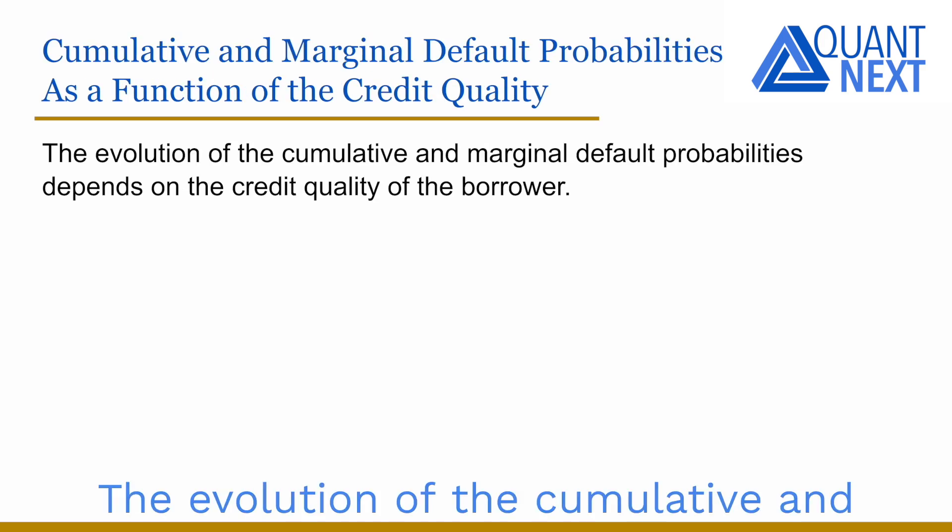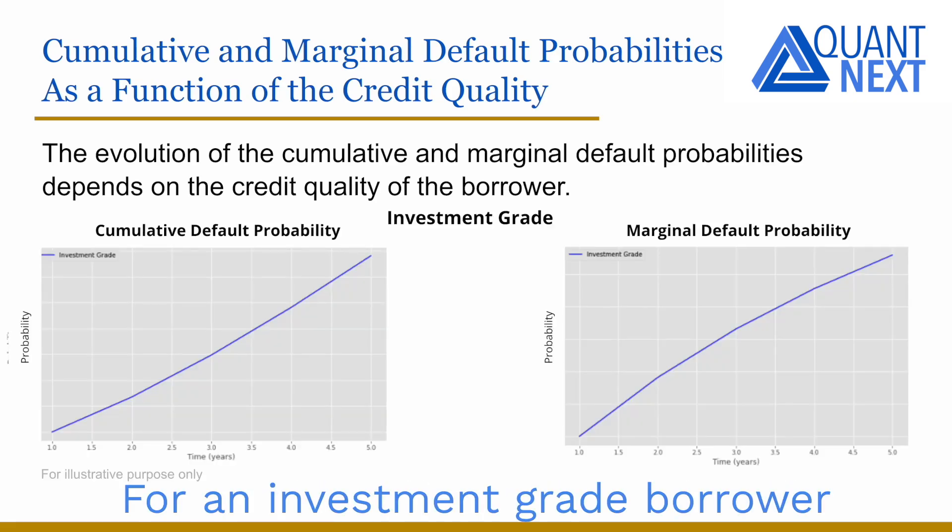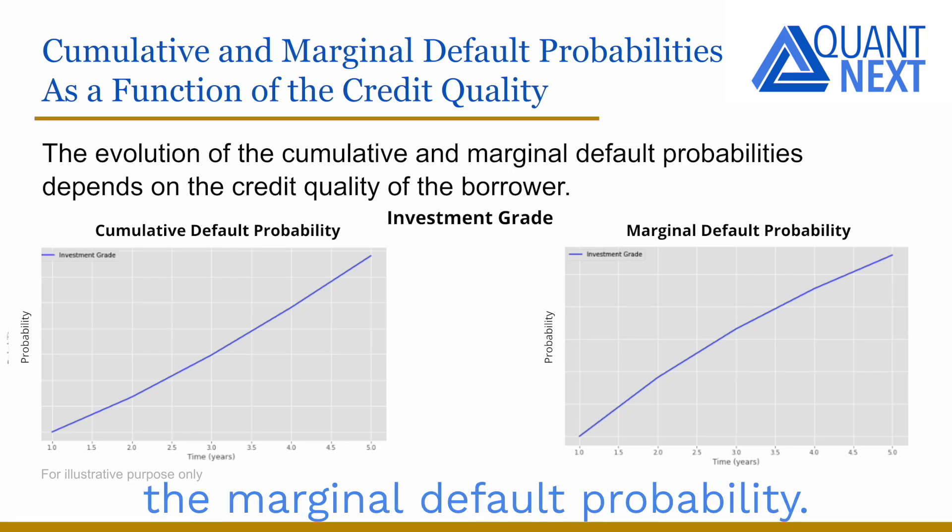The evolution of the cumulative and the marginal default probabilities depend on the credit quality of the borrower. For an investment grade borrower with a good credit quality, the default risk is low on the short term. However, if the borrower doesn't default, there are risks that it will not be able to maintain the same credit quality over time that it downgrades, meaning an increase of the marginal default probability.